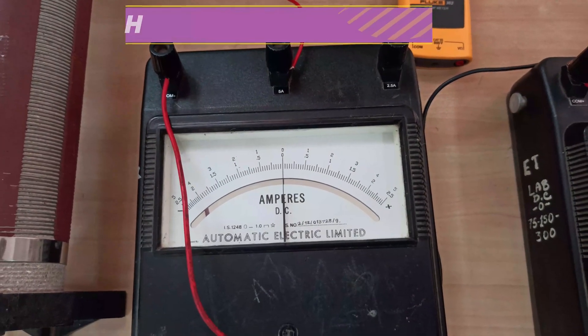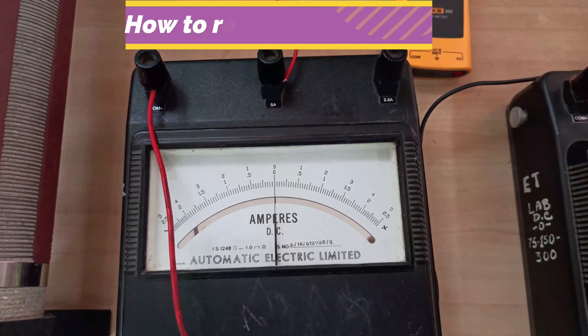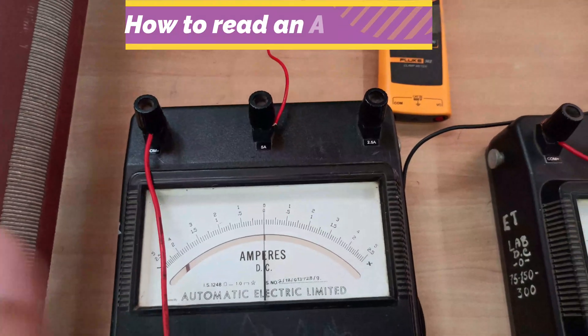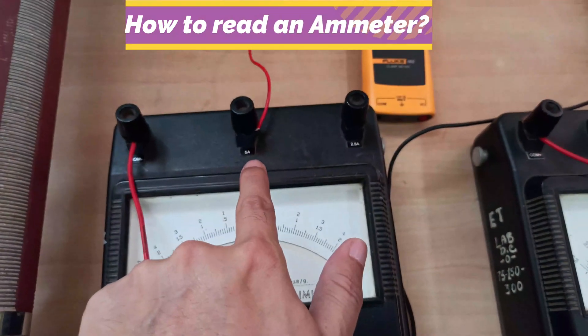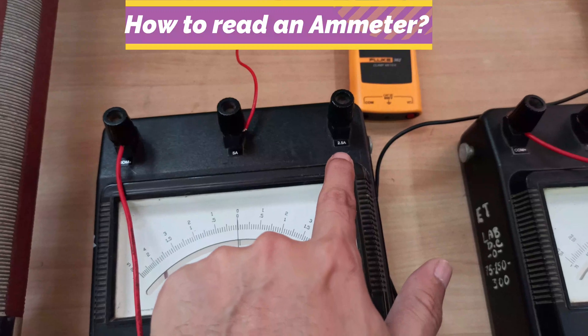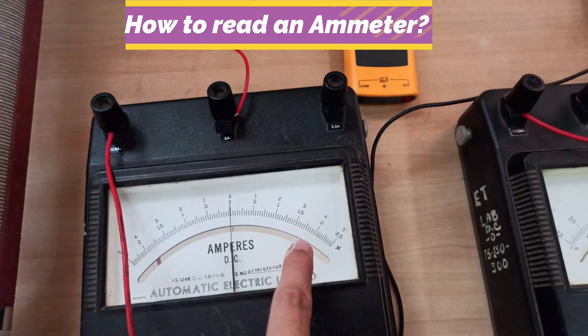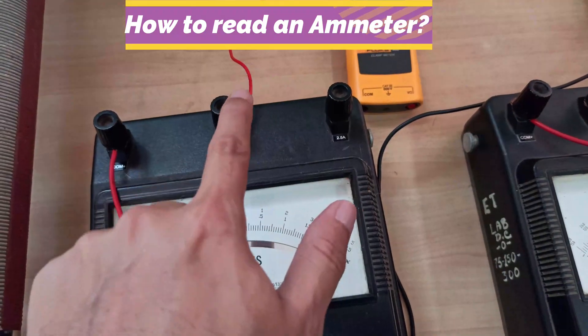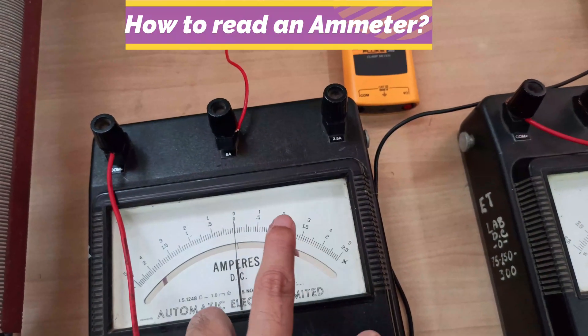And here also in the ammeter you can see there are two ranges: one is 5 ampere, another is 2.5 ampere. You must ensure that wherever you are connecting, you are looking at that scale.